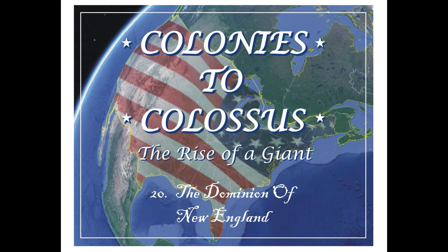This is podcast number 20 in my series Colonies to Colossus: The Rise of a Giant. In this podcast, we're going to take a close look at the Dominion of New England. In 1686, the English king, James II, decided to pursue a new colonial policy that called for reorganizing the boundaries and governments of some of the English colonies in North America. This restructuring involved the merging of the New England colonies into one big super colony called the Dominion of New England.